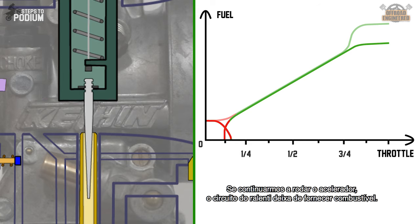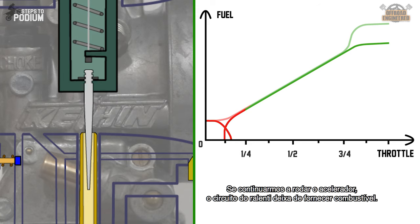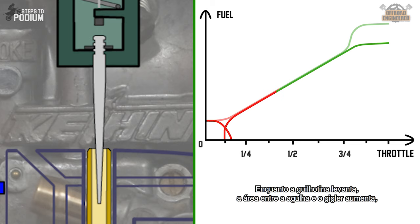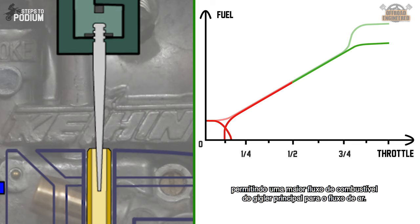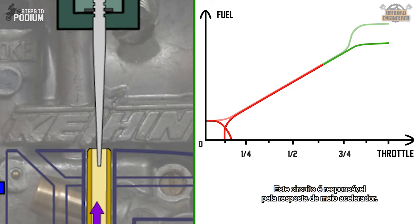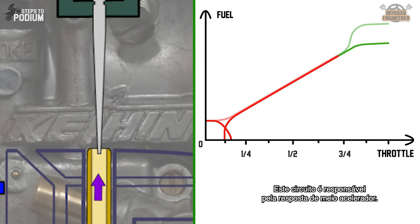If we continue to open the throttle, the idle circuit starts fading out. While the slide lifts, the area between the needle and the jet needle increases, allowing more fuel to be sucked through the main jet to the main air passage. This circuit is responsible for the mid throttle response.